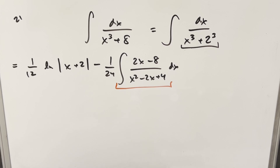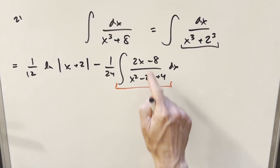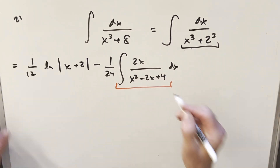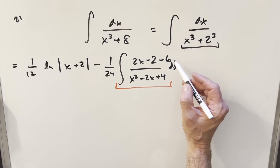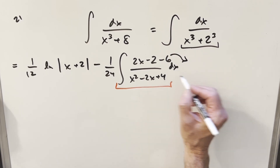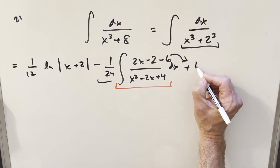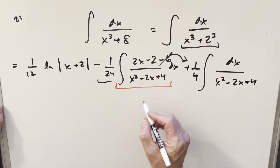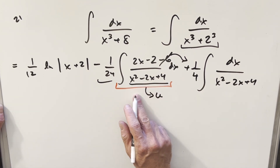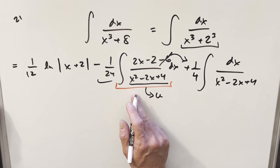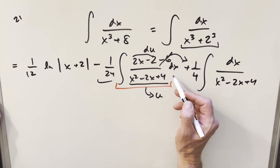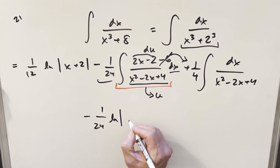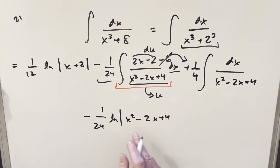Focusing on the integral where I want the derivative of the denominator in the numerator. I rewrite minus 8 as minus 2 minus 6, pulling out the minus 6 as a separate integral. Multiplying minus 6 by minus 1 over 24 gives plus 1/4. So we get plus 1/4 times the integral of dx over x squared minus 2x plus 4. The first part with 2x minus 2 in the numerator is a u-substitution where u equals the denominator, giving natural log of absolute value of x squared minus 2x plus 4.